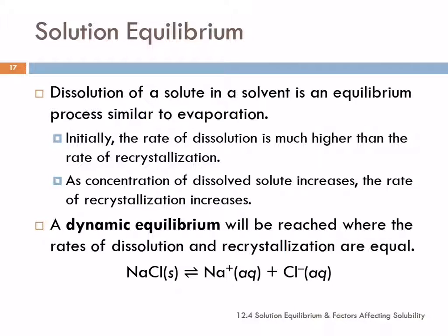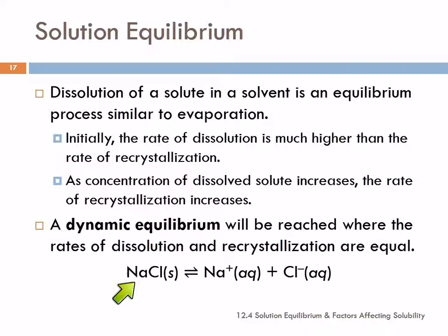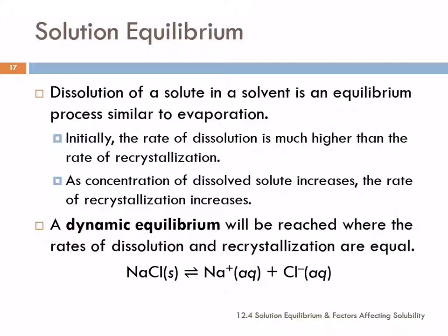As the concentration of the dissolved solute increases, we start to have some of it recrystallizing into a solid. Eventually we'll get to a point of dynamic equilibrium where the rate of dissolution and the rate of recrystallization are equal. So we have sodium chloride dissolving to form sodium ions and chloride ions, and then we also have sodium and chloride ions recrystallizing to form solid sodium chloride.